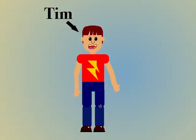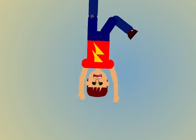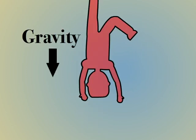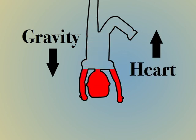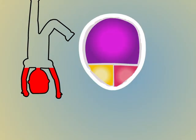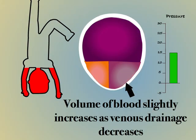This is Tim. If we were to take Tim and hold him upside down, then gravity is going to naturally want to push his blood down in the direction of his skull. The heart and the rest of the cardiovascular system is going to have to work against gravity as it pushes blood out of the brain. The volume of blood inside the brain will therefore slightly increase, leading to an increased intracranial pressure.